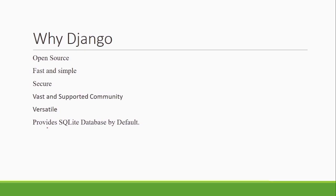Why go for Django? It is open source, free, fast, and simple. Fast because a lot of features are provided — you don't have to write from scratch. Simple because it is based on Python, which is one of the simplest programming languages to start with. It is secure because it provides authentication and authorization features. It also has a fast and supportive community with many dedicated users that will help you out if you are stuck anywhere in your application.